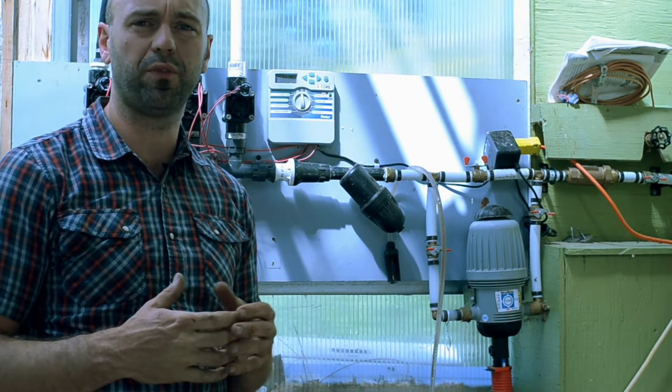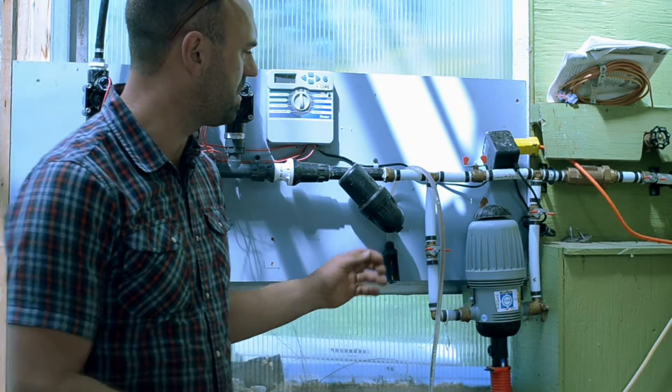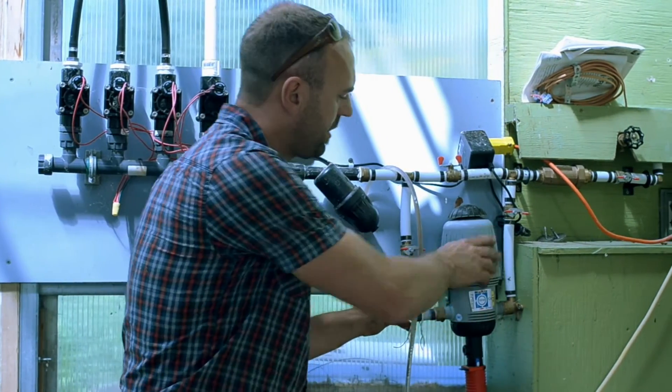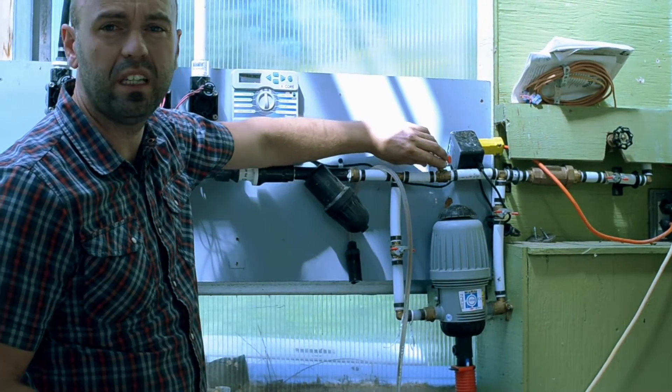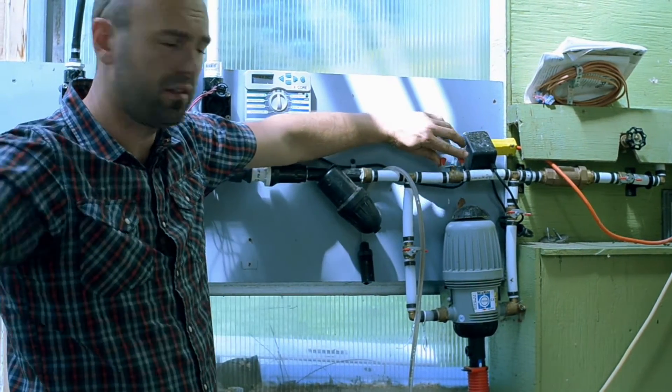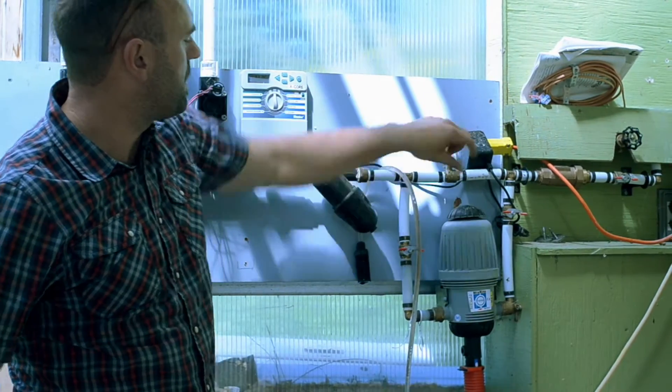One of the extra little features that we installed on this irrigation system is an injector. This injector works on a simple Venturi principle and when we want to do compost tea injection to our entire space all we do is flip this valve here, open this up here,